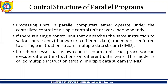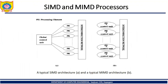If each processor has its own control unit, each processor can execute different instructions on different data streams. This model is called Multiple Instruction stream, Multiple Data stream — MIMD. In the figure, diagram A shows SIMD where there are different processing elements (PE) connected to a global control unit via an interconnection network. Diagram B shows the MIMD architecture where each processing element along with its own control unit is connected to the interconnection network.